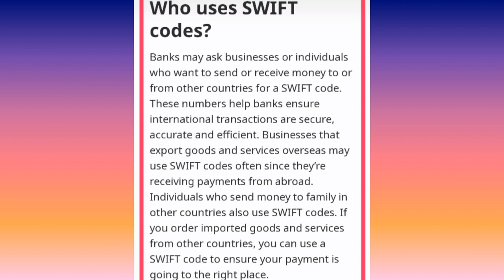If you want to send money intercontinentally — from Africa to Australia or to North America — you can use a SWIFT code. If you want to get the SWIFT code of a certain bank, just go to their website and check it there. Or you can go to the bank and ask them their SWIFT code, and then you can do your international transfers.